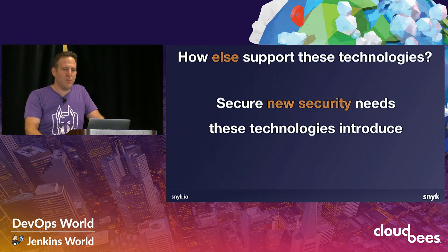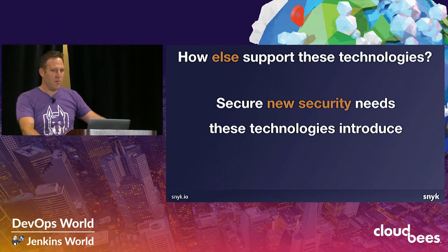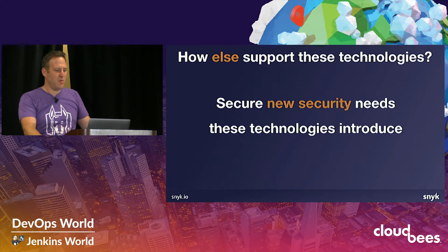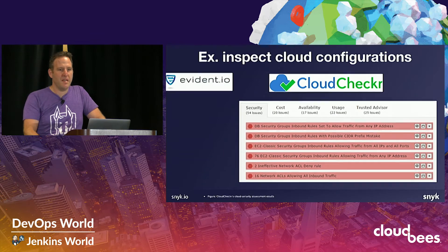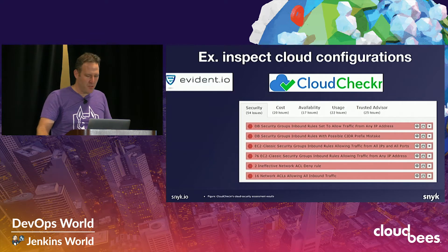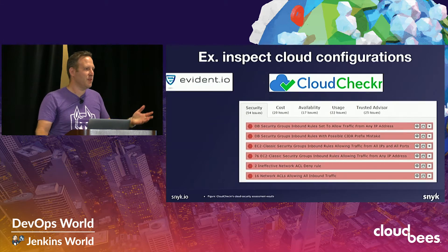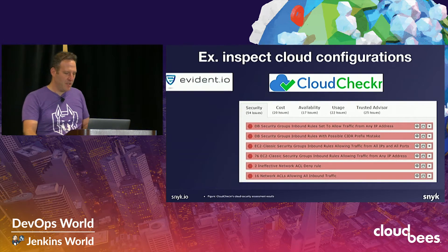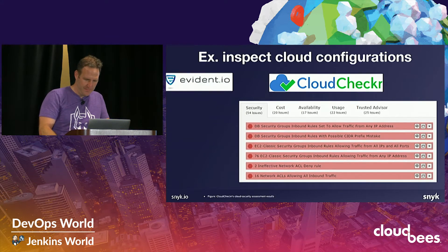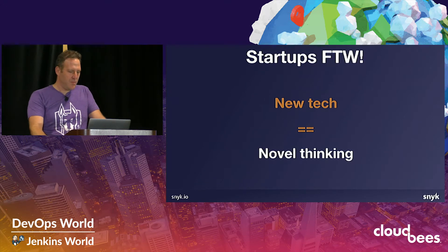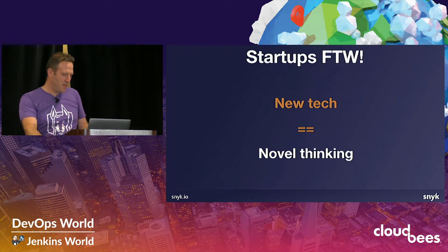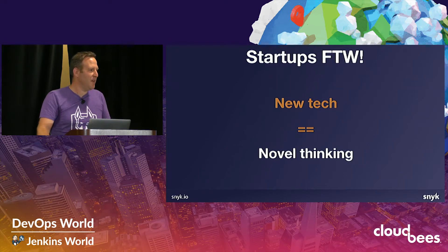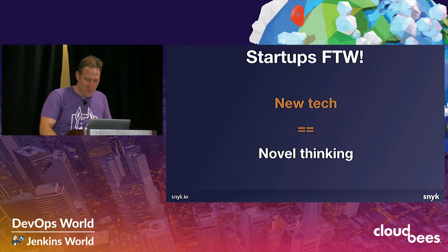How else do we support new technologies introduced in the DevOps world? There are new security needs, and we can build new technologies to secure them. Companies like Evident.io and CloudChecker scan your cloud products and look for bad configuration problems, publicly open storage buckets, and leaking credentials. Supporting new tech generally requires novel thinking, and it's a little bit harder for the incumbent companies. This is where we see a lot of startups excel, attacking these new techs from the ground up, and we believe this will continue to show a lot of M&A in the space.